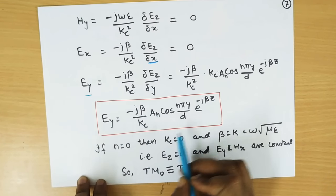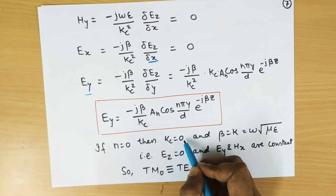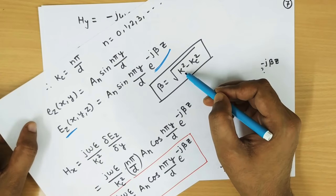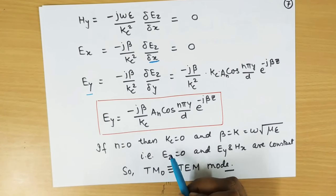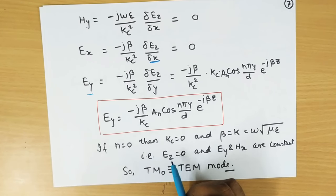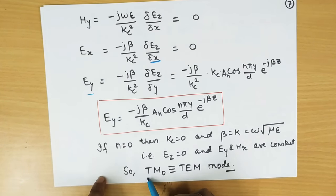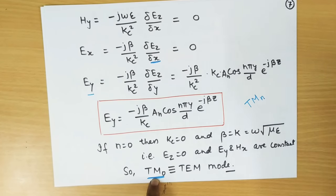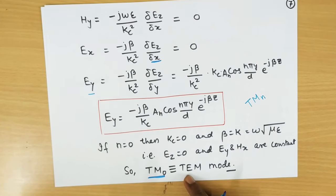If we put n equal to 0, then k_c equals n pi over D, so k_c becomes 0. If k_c is 0 in our expression, beta becomes k, which is omega times the square root of mu epsilon. In that case E_Z will be 0. Since H_Z is already 0 and E_Z also becomes 0, this is nothing but TEM mode. So putting n equal to 0 is called TM0 mode. In general, we say TM_n mode for n equal to 0, 1, 2, 3, and so on, and TM0 is equivalent to TEM mode.